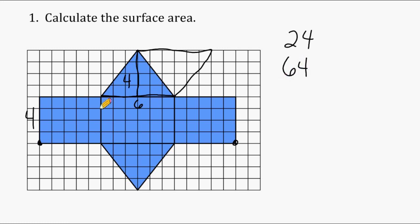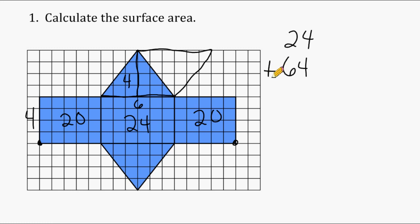If you're more comfortable finding the area of each rectangle individually, that's fine. This rectangle is 4 by 5, so that's an area of 20. This is a 4 by 6 rectangle, which is 24. And this is a 4 by 5 rectangle, which is 20. So 20 plus 24 plus 20 also gives us 64. Combining the triangle area of 24 and rectangle area of 64 gives us a total of 88 square units.